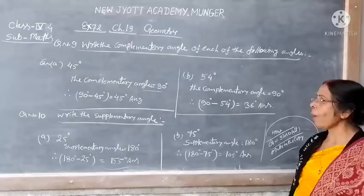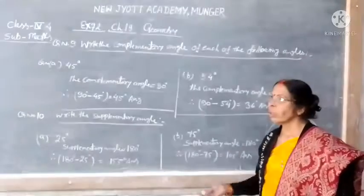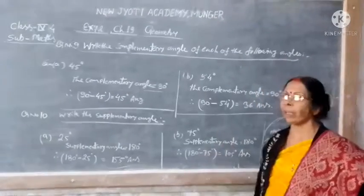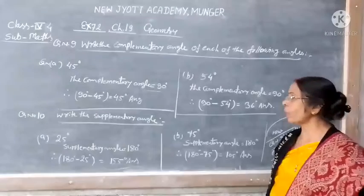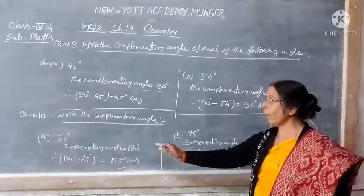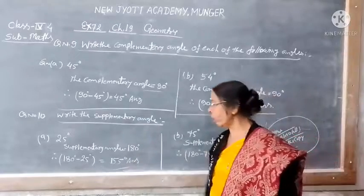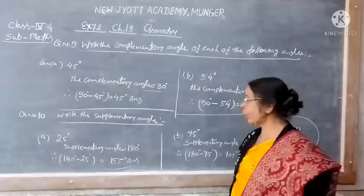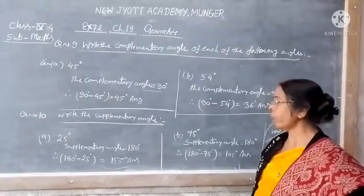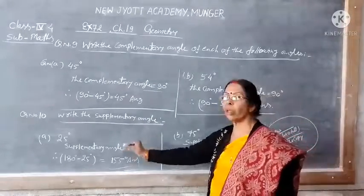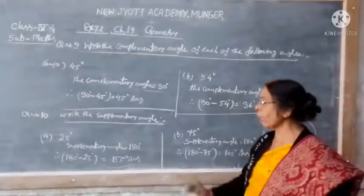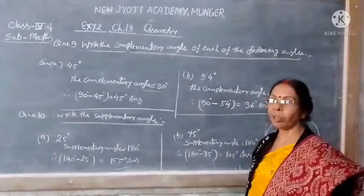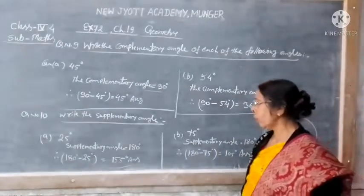We have written a bit about supplementary in the book. Take out your math book and open it to get the question: write the supplementary angle. Question number 8, part A — here it is 25 degrees. As you know, supplementary angle equals 180 degrees. So, 180 degrees minus 25 degrees gives us 155 degrees. That is your answer.